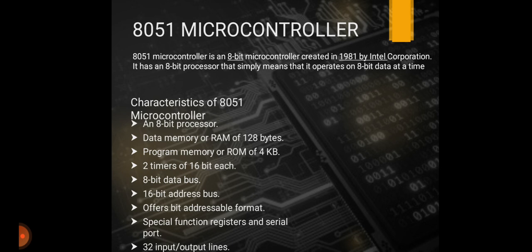The characteristics of the 8051 microcontroller: it is an 8-bit microprocessor, with 128 bytes of data memory (RAM) and 4 KB of program memory (ROM). It has two 16-bit timers, an 8-bit data bus, a 16-bit address bus, bit-addressable format, special function registers, serial ports, and 32 input and output lines.